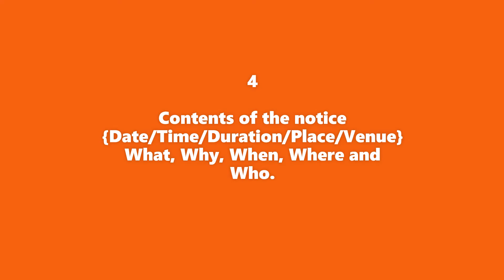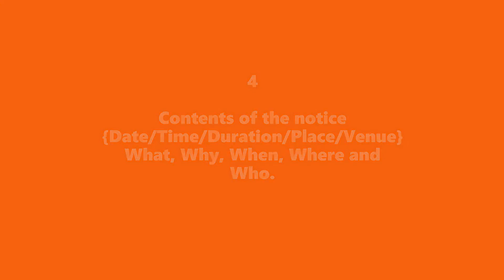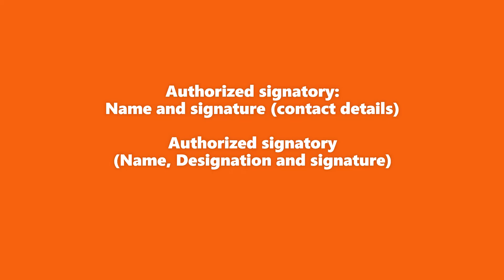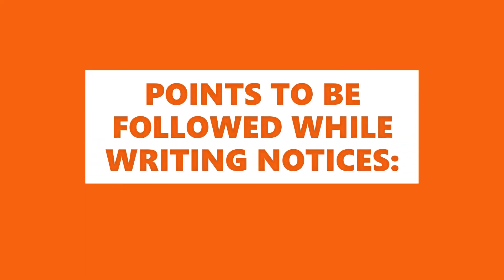The fourth element is the notice body, which must carry details such as date, time, duration, and place — answering the questions of when and where. At the end, there must be an authorized signature with contact details, your name, initials, and your designation — indicating who has circulated the notice and their role.